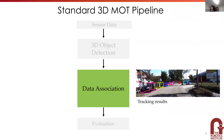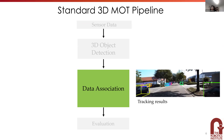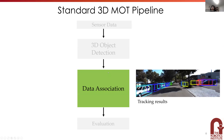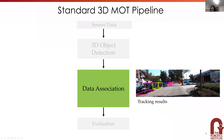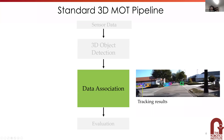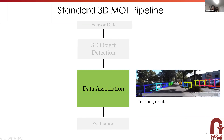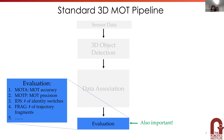The next part of the pipeline is data association. The typical approach is to match trajectories from the last frame with detections in the current frame, giving us updated trajectories which we apply iteratively over the entire sequence. The last part is evaluation, which measures performance using a bunch of metrics. Good metrics are really important for the community as a whole so we can understand whether and how we're making progress.